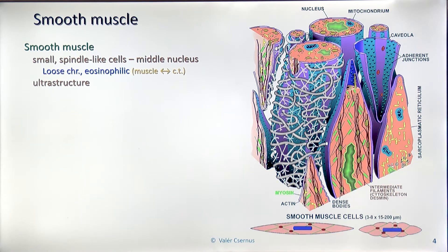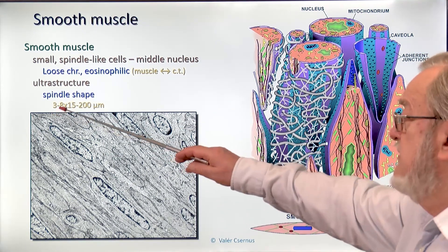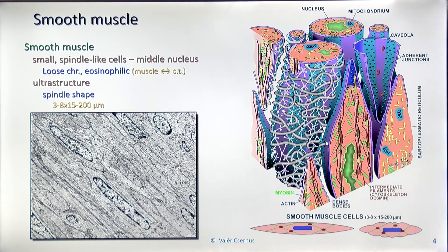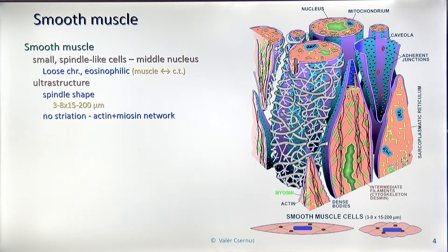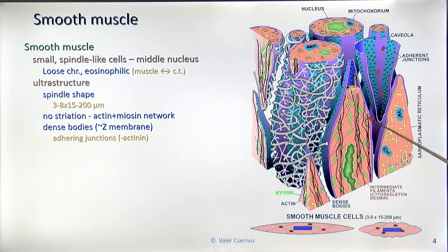In this picture, I can show you the electron microscopic structure of smooth muscle. The smooth muscle has a spindle shape, about 3 to 8 micrometers in diameter and 15 to 200 micrometers long. It has no striation, even though the same filaments — actin and myosin — are there. However, they are not parallel to each other, which would make visible cross-striation, but instead form a network, so cross-striation is not visible even under an electron microscope.